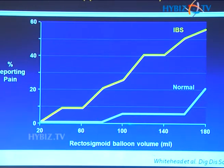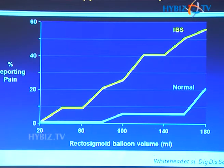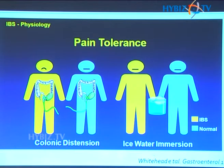We know that a patient with IBS has a very low threshold for inflation pressure. Whether with rectosigmoid balloon pressure, they start to experience more and more pain for a given volume of air. The same concept has been applied and proved for other viscera such as the esophagus, stomach, and small intestine as well.